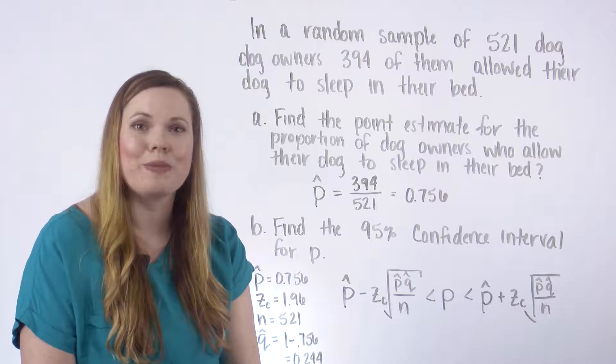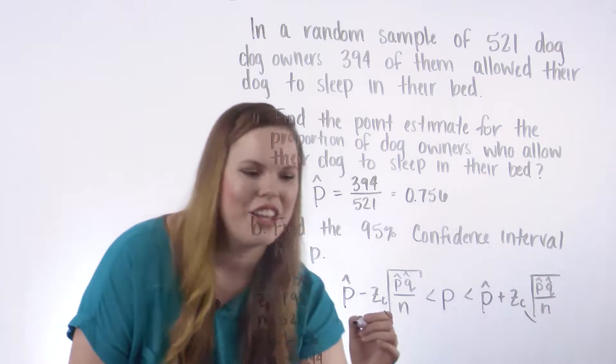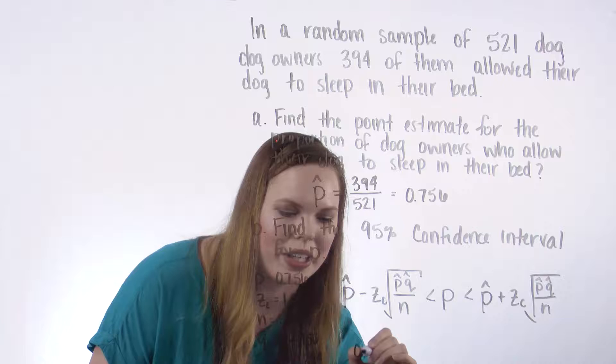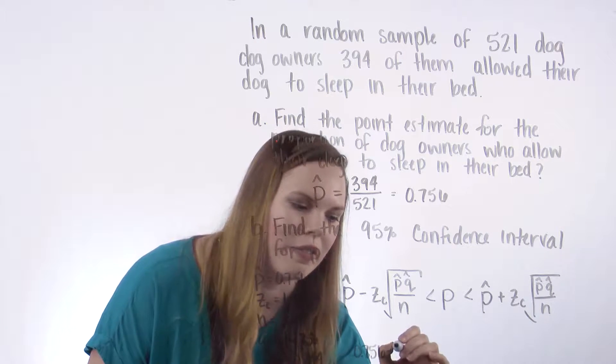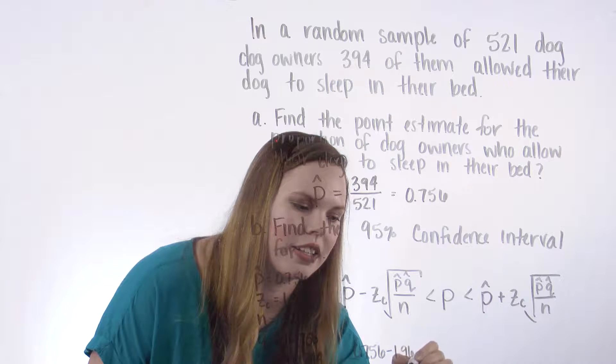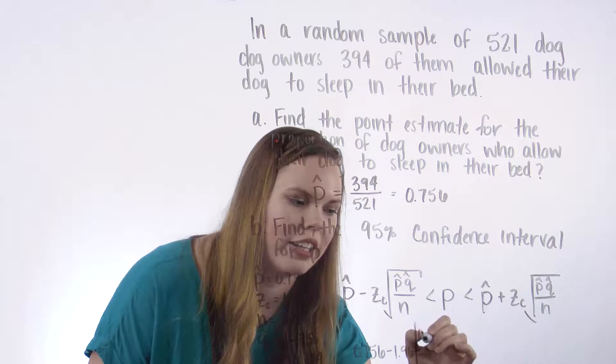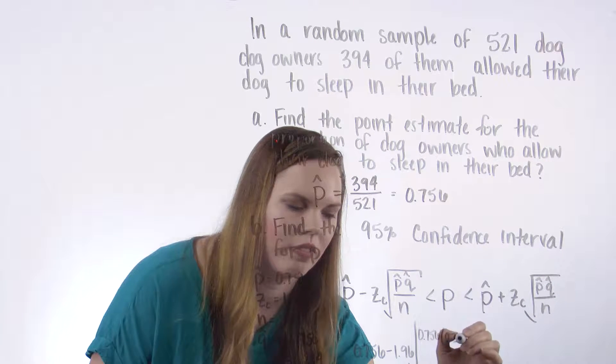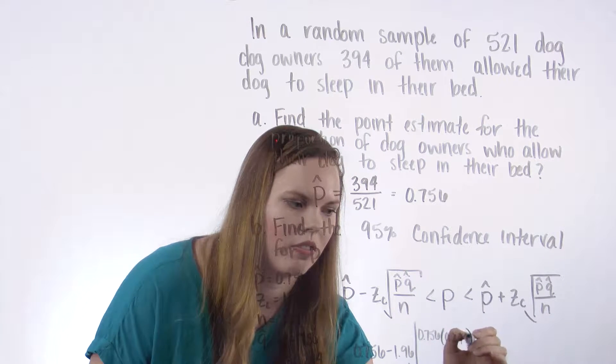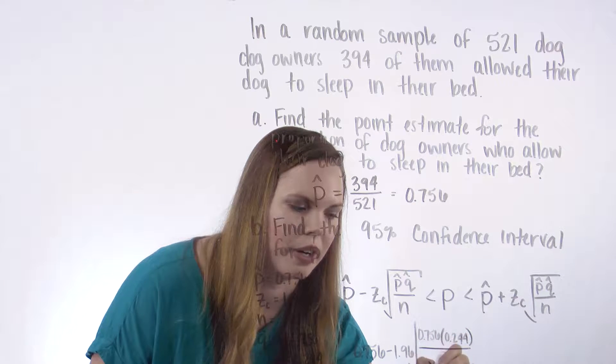And then we just plug in our values and find our confidence interval. So P hat of 0.756. Z sub C of 1.96. P hat again. Q hat. We divide by the square root of N.